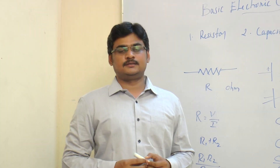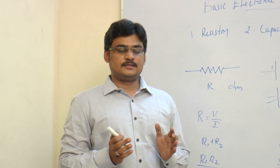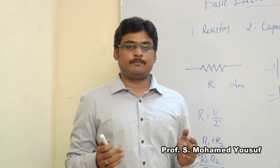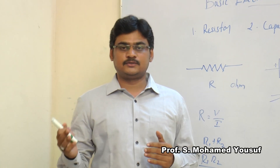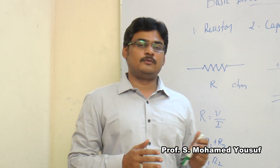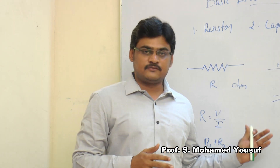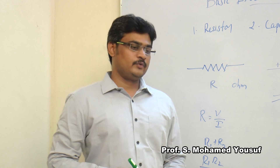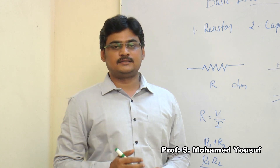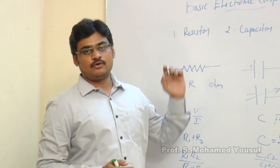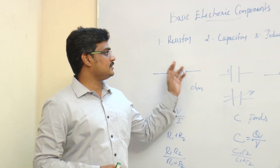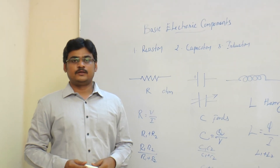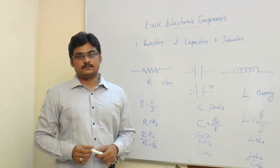To conclude: the resistor dissipates electrical energy, whereas the capacitor stores energy in the form of an electrostatic field and the inductor stores energy in the form of an electromagnetic field. I hope you all understand the basic electronic components — resistor, capacitor, and inductor. Thanks for watching.